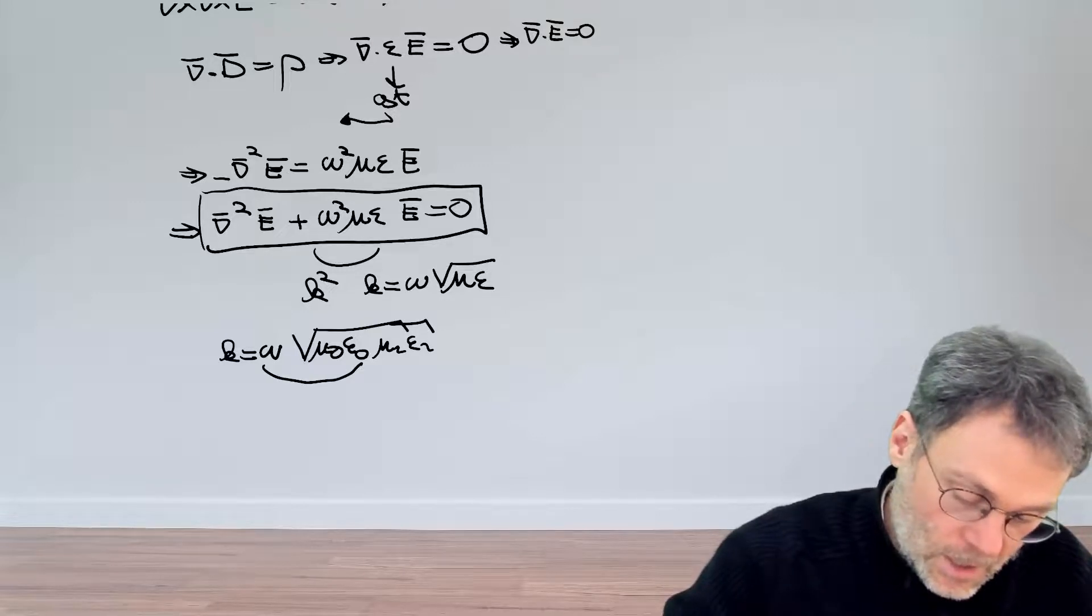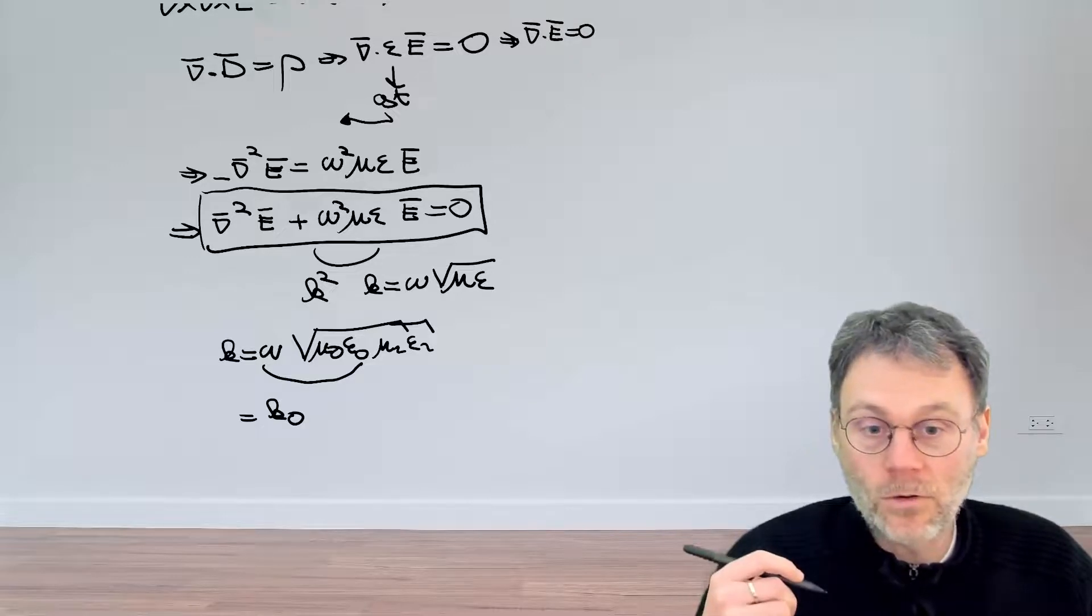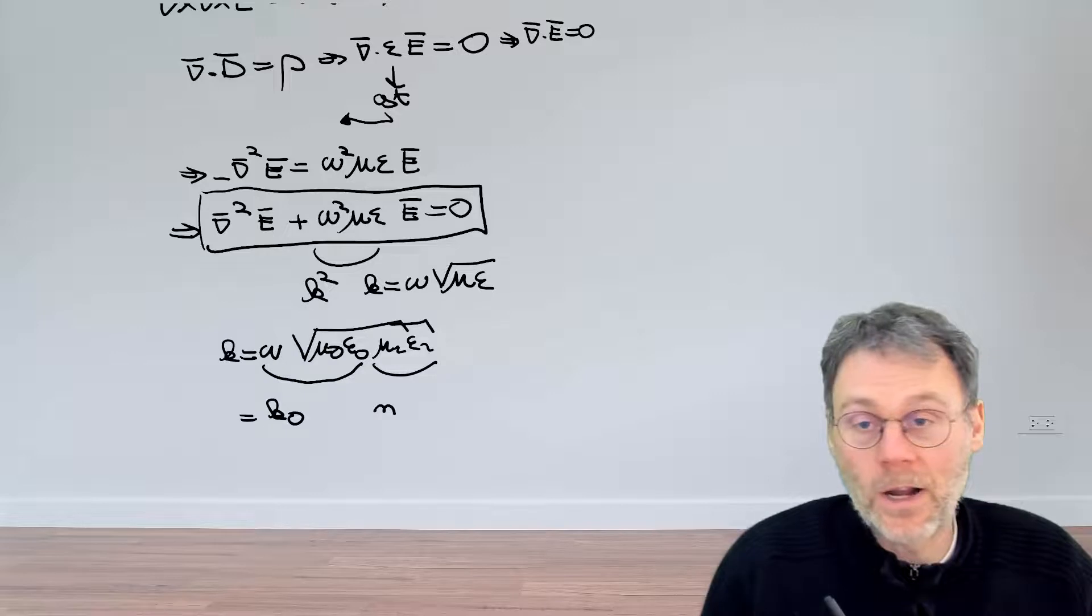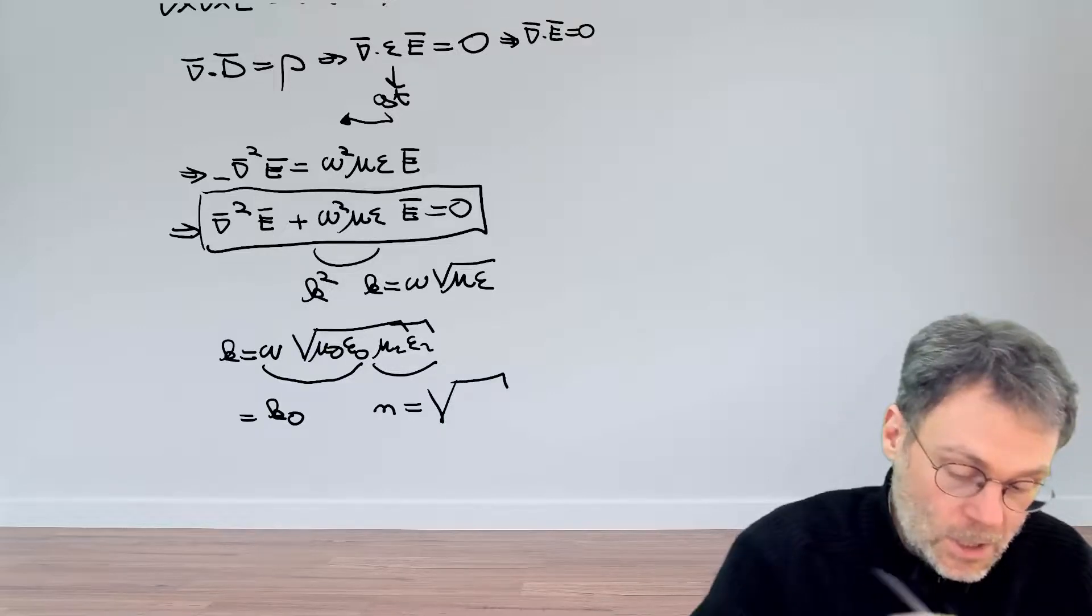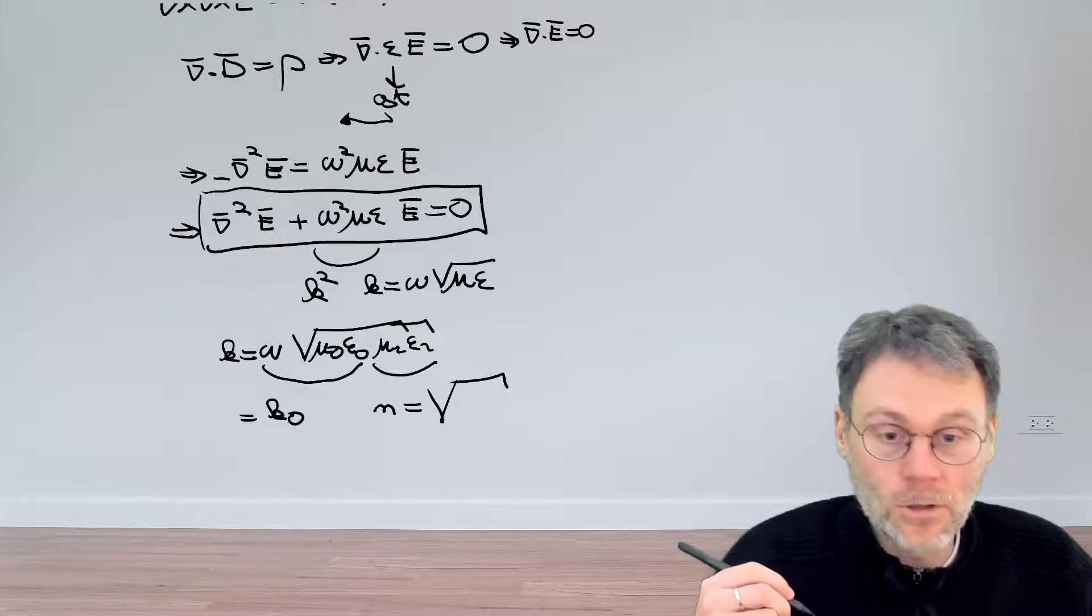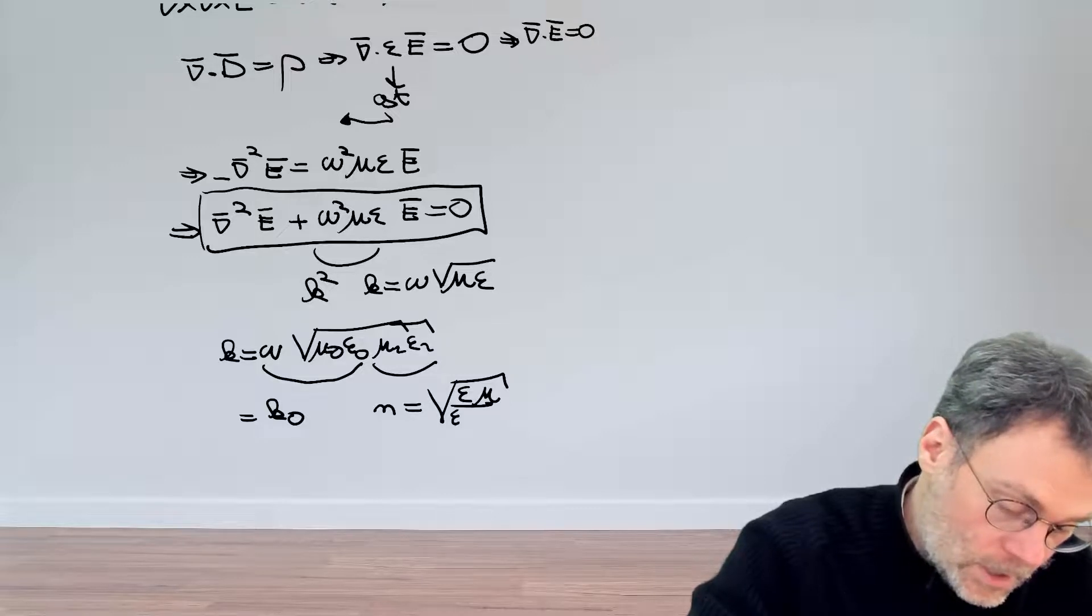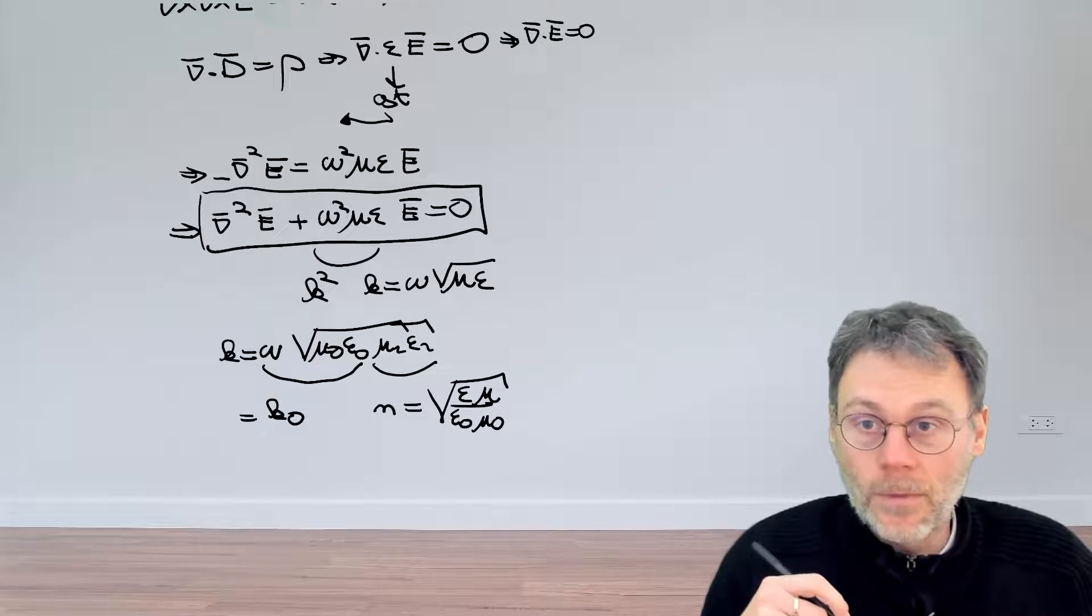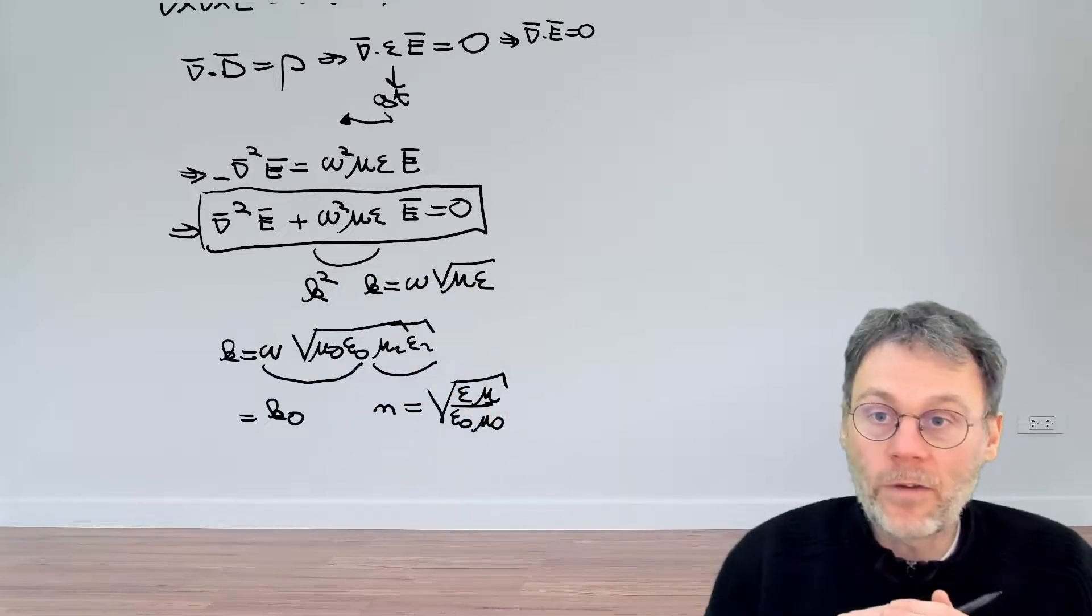So this is another way of writing this. And then you can combine this thing as k_0, the wave vector in vacuum, and this thing here as the refractive index n. And so the refractive index is then just the square root of mu_r epsilon_r, which is basically epsilon mu divided by their vacuum counterparts. This is just some notational thing to introduce the wave vector here.